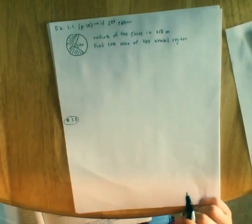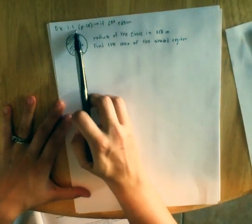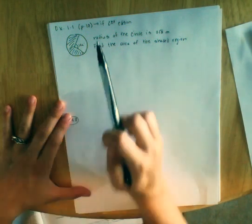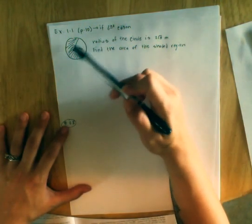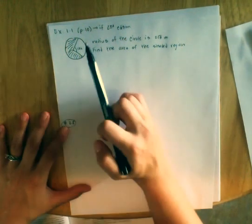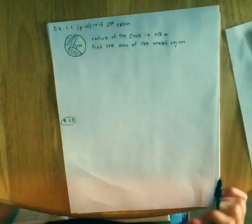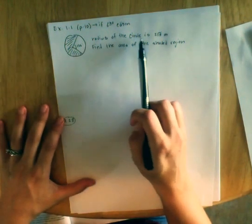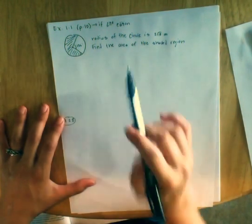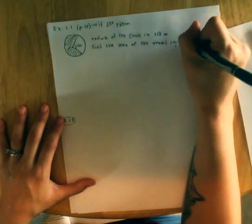Now, here is our first example. It is example 1.1 in your book. It is page 10 if you are using the second edition. And we have a circle with a shaded portion. A central angle here of 126 degrees. And it says the radius of the circle is 2 root 5 meters. Find the area of the shaded region.